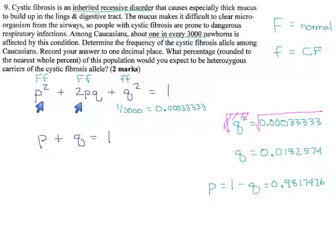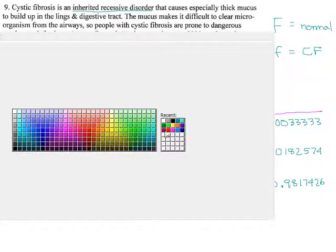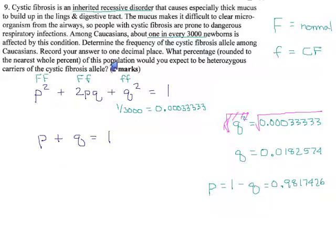So armed with that, we can find any of these terms that they want. This is a good time to actually check the question and see what we've been asked to find. Determine the frequency of the cystic fibrosis allele, meaning the little one, meaning q. Among Caucasians, well, it's this much. This is the frequency, or if you want, you can multiply it by 100%, and you'll get 1.82%.